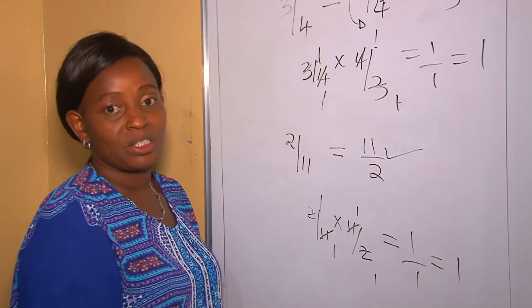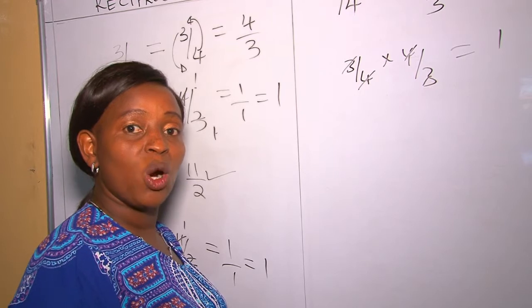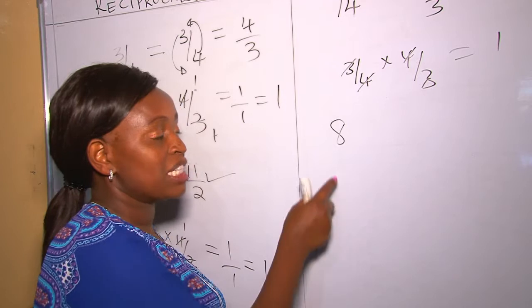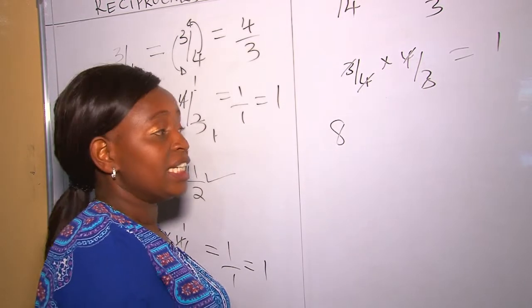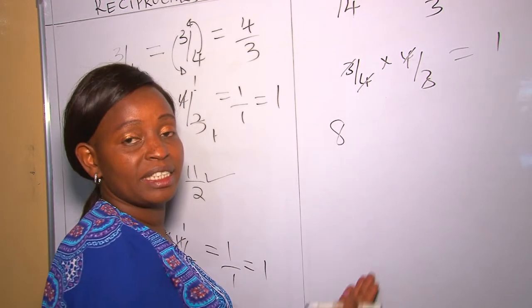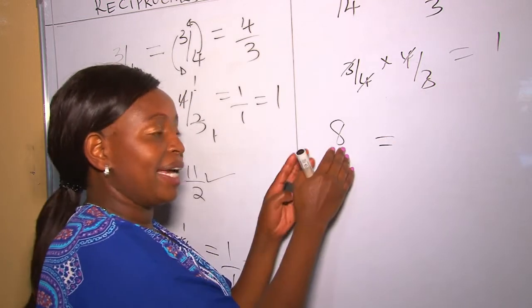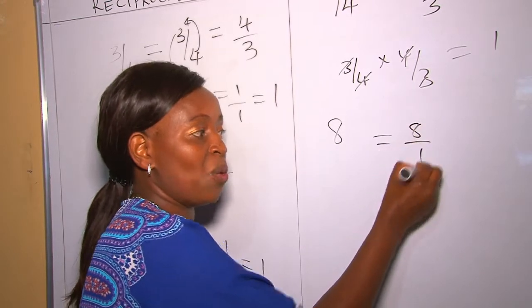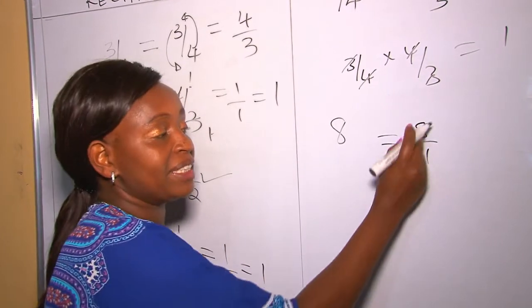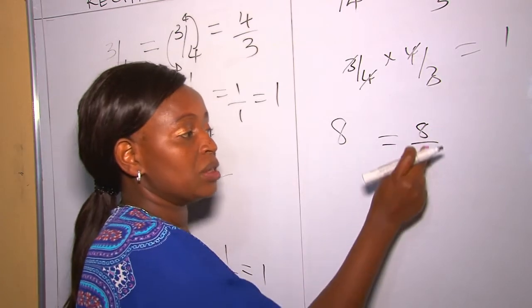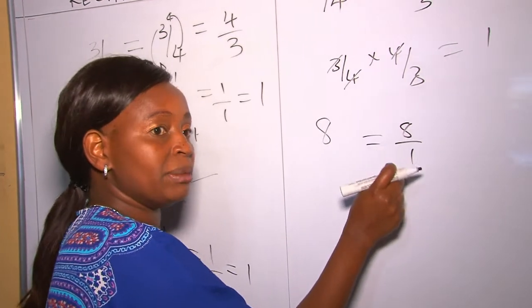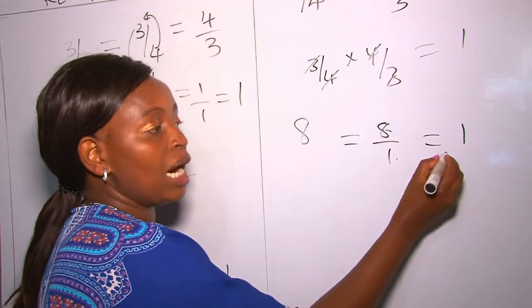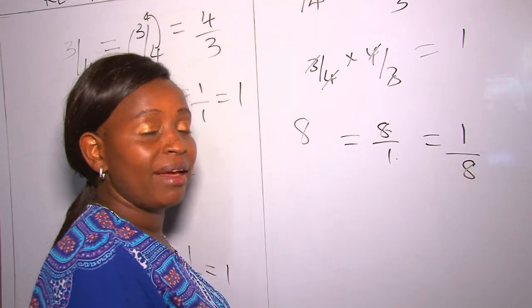Let's do another question. In case we are given a whole number like eight, to get the reciprocal we note it doesn't have a denominator to interchange. So we make it a fraction by writing eight over one — remember eight divided by one is still eight. Our denominator being one becomes our numerator, and our numerator eight goes down to become the denominator.